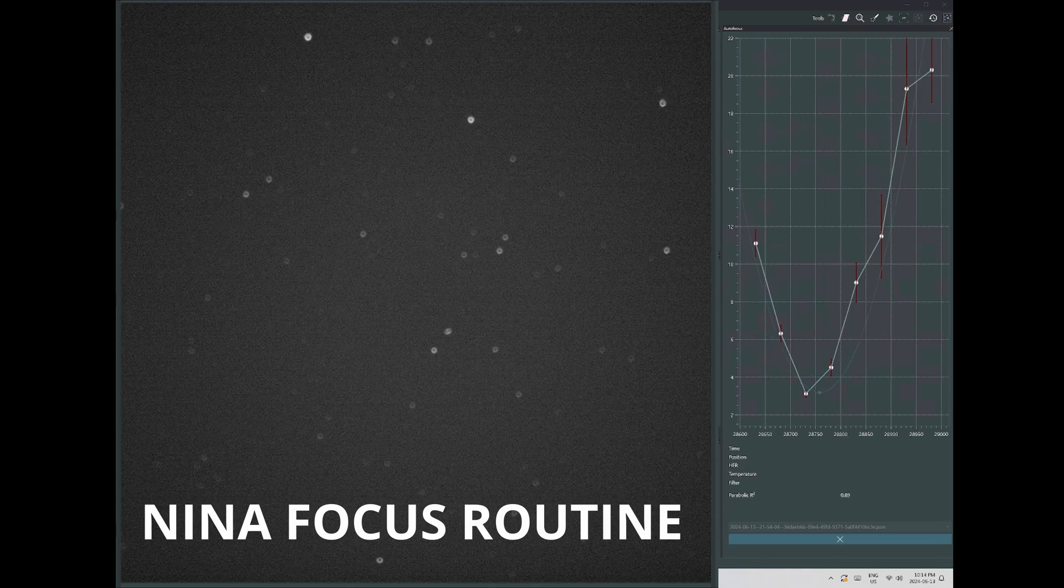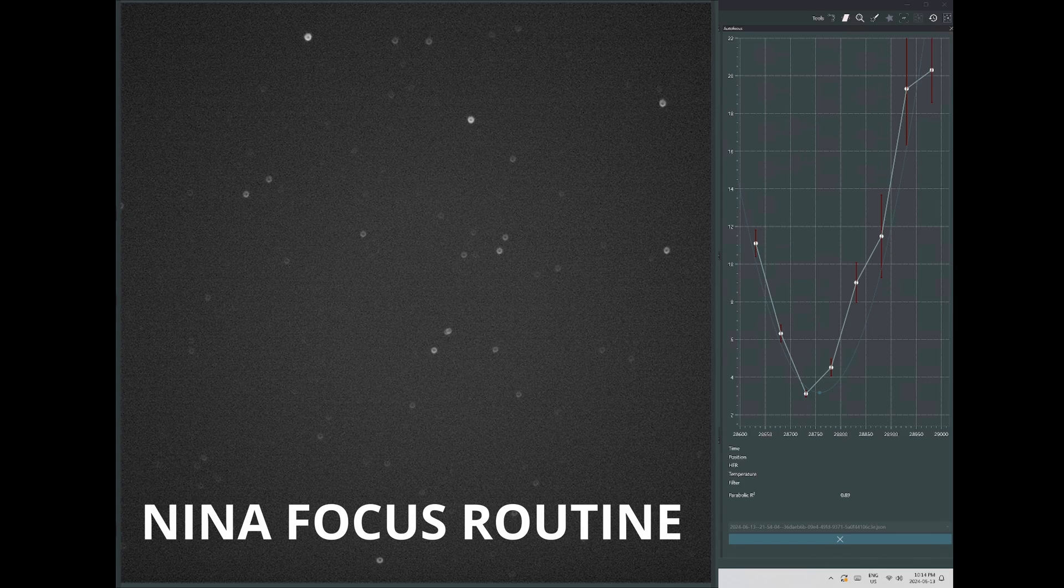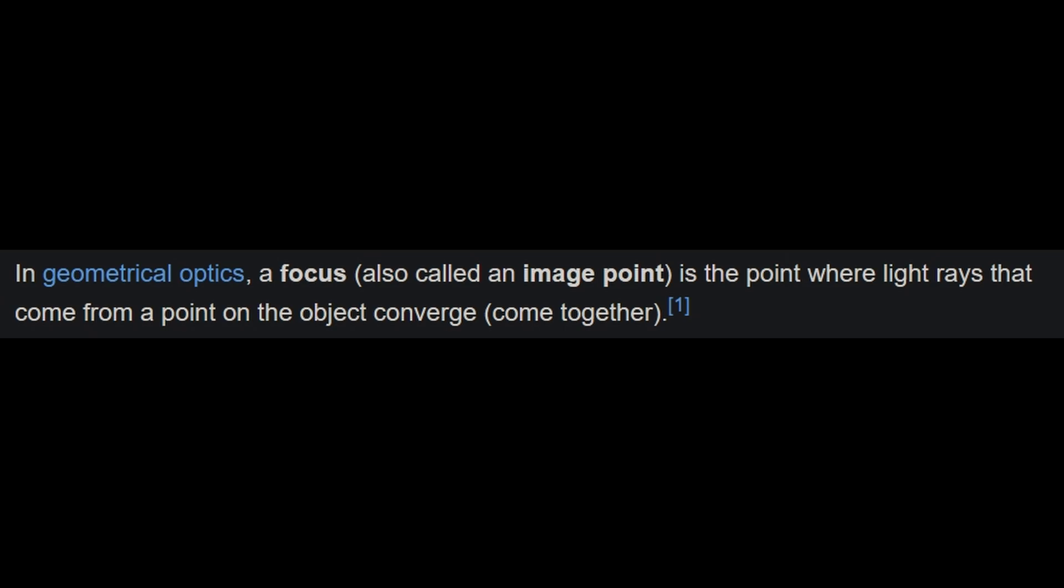But what is physically happening with light when a subject is brought into focus? I've pondered that question many times. And when I go into the internet and look up the answers to that question, I get answers like this. In geometrical optics, a focus, also called an image point, is the point where light rays that come from a point on the object converge, come together. And I get diagrams like this.